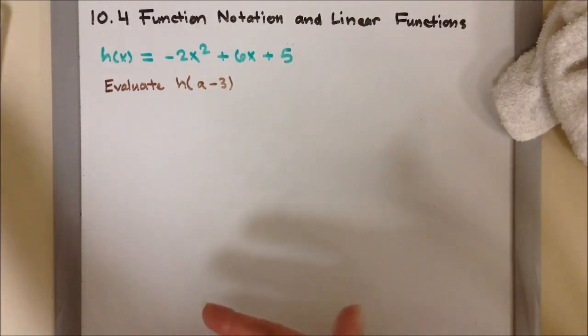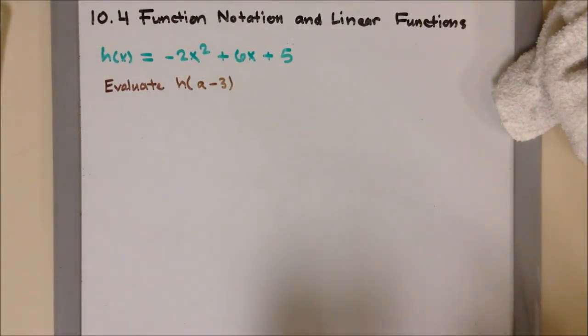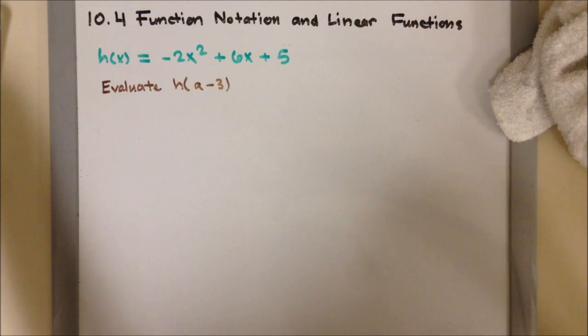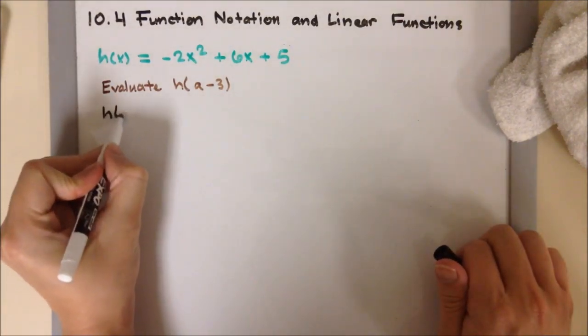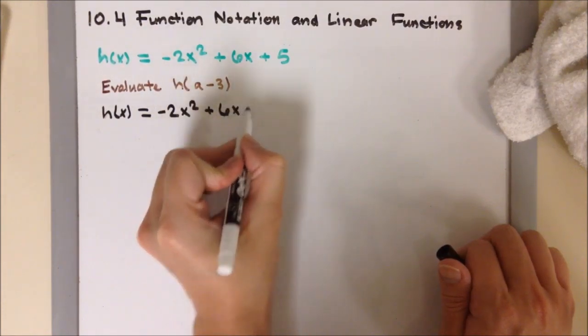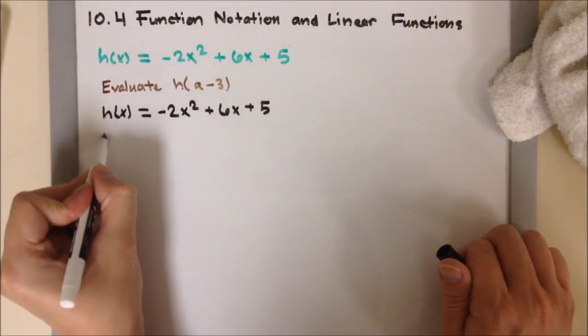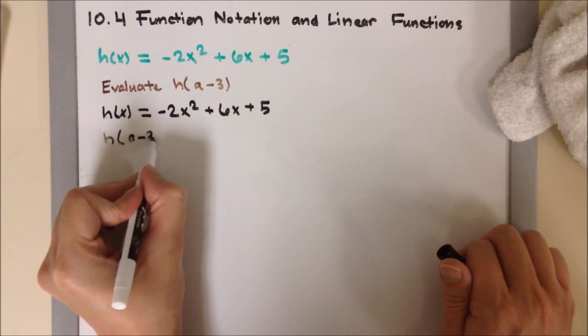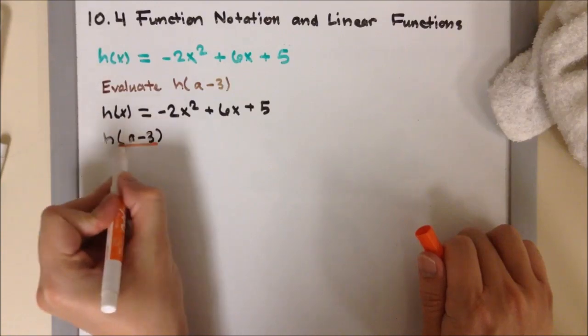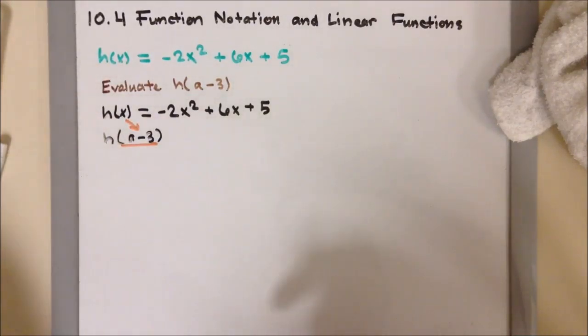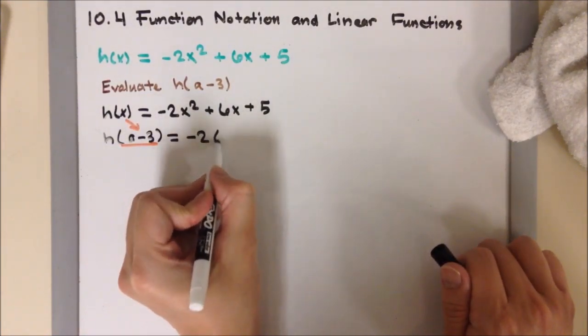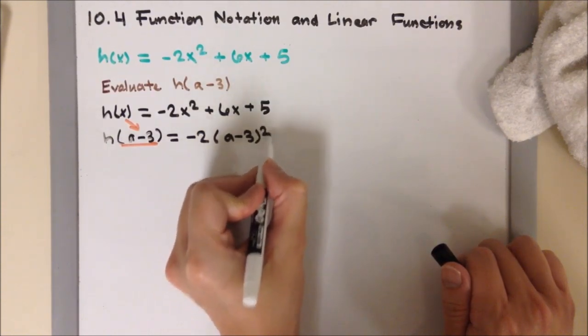As I said before, it's going to look different, but it's going to be the same process as what we had done for the previous examples. Alright, so we're going to start evaluating this function. So I'm going to start writing out h of x first. Negative 2x squared plus 6x plus 5. And it asks you to evaluate h of a minus 3. So again, I'm replacing all my x's with a minus 3.